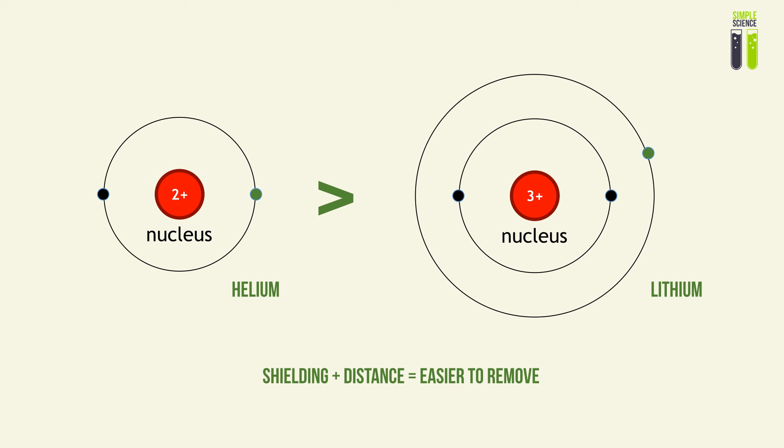There are going to be massive drops when you go down periods. This is due to the effect of shielding. As you go up an energy state from N equals 1 to N equals 2, there will be shielding and significant distance from the nucleus. Therefore, it is much easier to remove at a higher energy state.